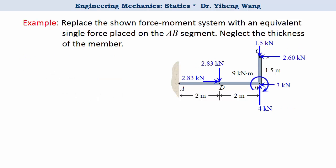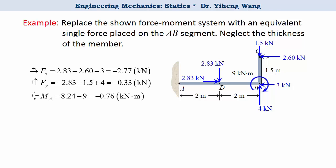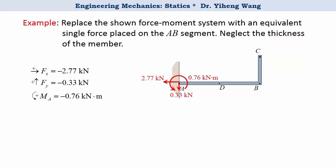And now I can summarize the resultant force along the x direction, along the y direction, as well as the resultant moment about point A. And this equivalent force moment system must be placed at point A because I summarized the moment at point A.